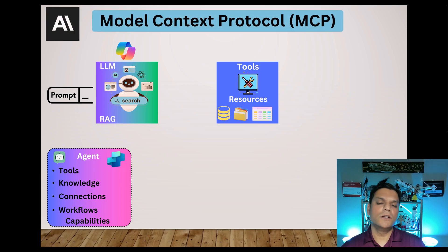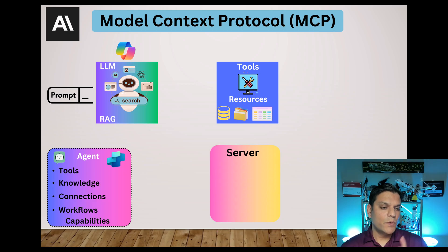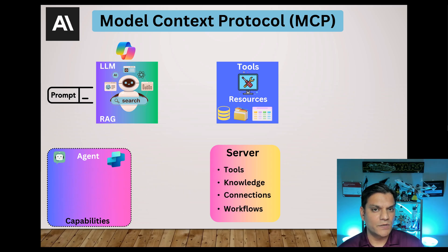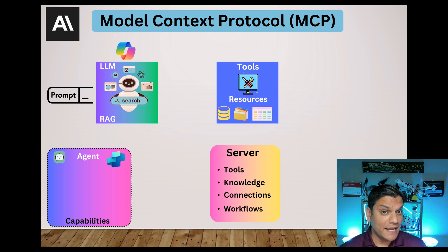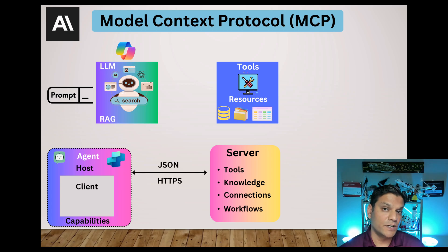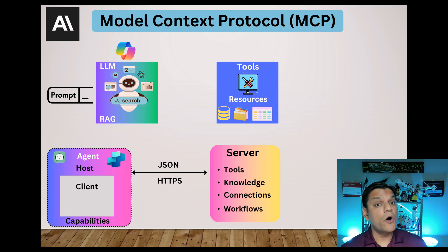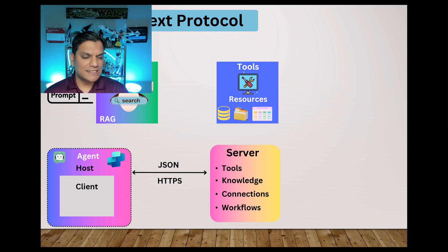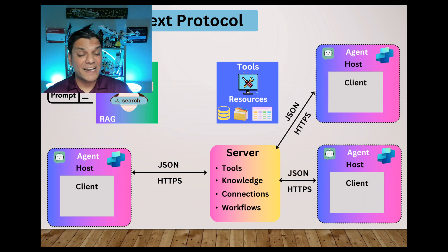This is where Model Context Protocol steps in and things start to change. The first addition is a server. What the server does is take all the stuff we have — the tools, knowledge, connections, and workflows — and moves it into a more centralized place. Now our agent becomes a host, and it is also the client: the client which interacts with the prompts of end users, and also communicates with the server plus the large language model. The communication between the client and the server happens using JSON or HTTPS protocols. What's interesting with this design is that other agents can now hit that one central core server, so we don't have to redo all the work from scratch.